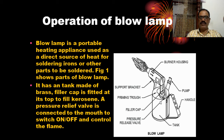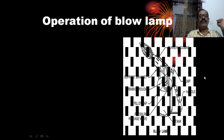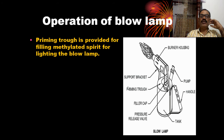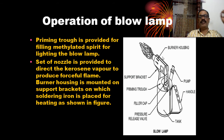The tank is made up of brass. A filler cap is fitted at its top; the filler cap is fitted to fill kerosene. There is a pressure relief valve. A priming trough is fitted for filling the methylated spirit for lighting the blow lamp. The nozzle is provided to direct the kerosene vapour to produce a forceful flame.